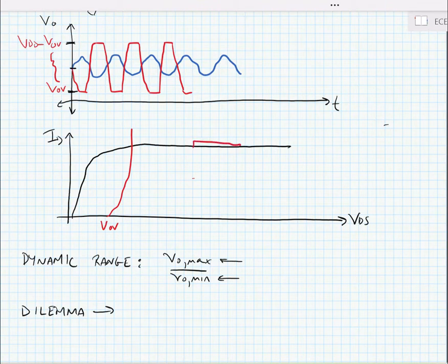Now we know that we can change VOV. The VOV is equal to 2ID over mu times Cox times W over L. So we can change VOV by changing the size of the device. But if we change the size of the device, we also affect the output resistance. So we have to be wary of that.